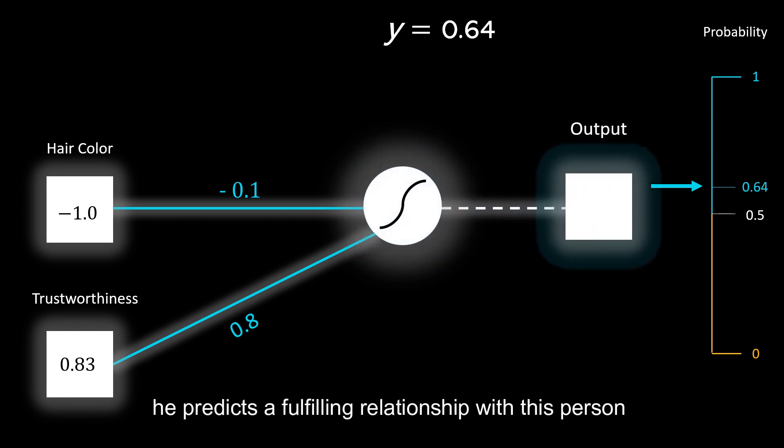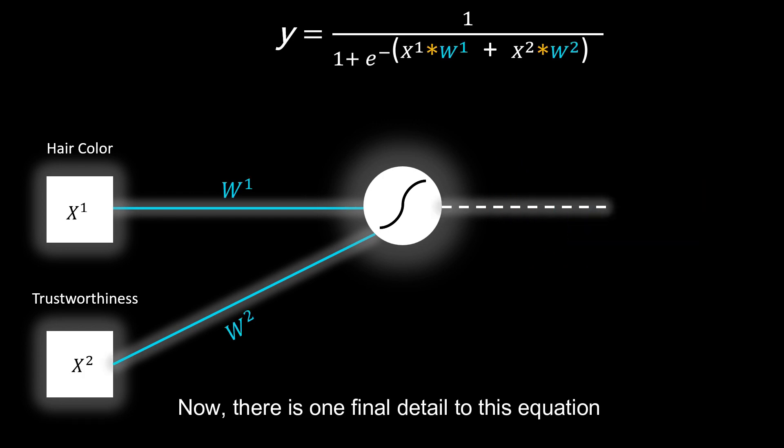Since Neil's current prediction is above the threshold, he predicts a fulfilling relationship with this person.